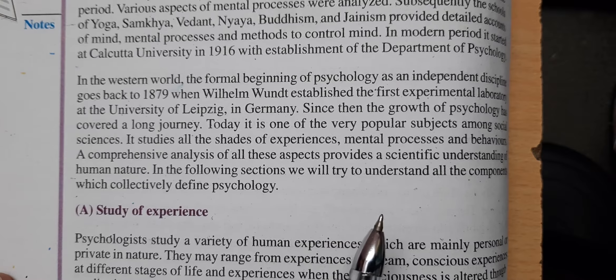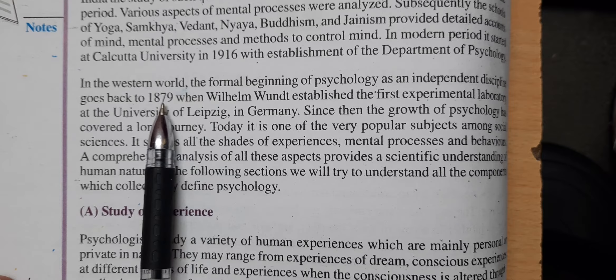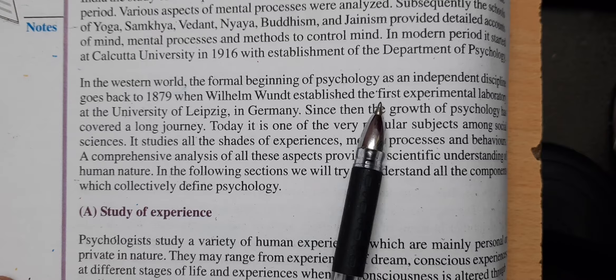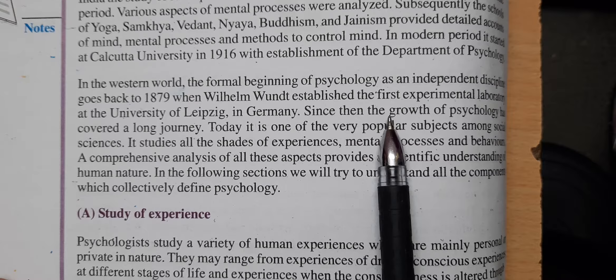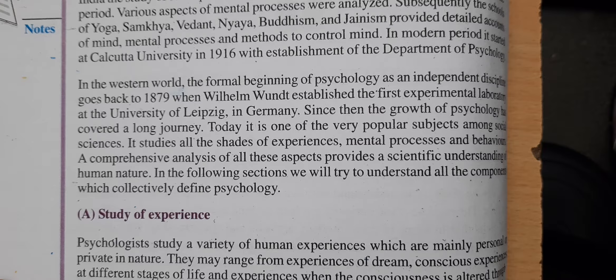So going back to 1879 in the western world — before India established its department, Germany already had an independent institute. It was in 1879 when Wilhelm Wundt established the first experimental laboratory at the University of Leipzig. Germany had already started a department of psychology where they would experiment on people's behavior to understand why they behave in certain ways and what problems exist with their mental health. Since then, psychology has grown and is now part of social sciences because human behavior is very important for society.